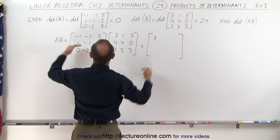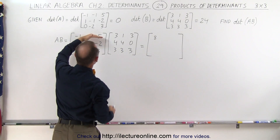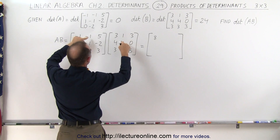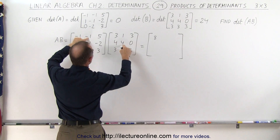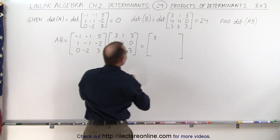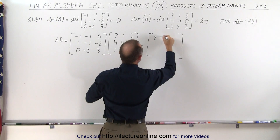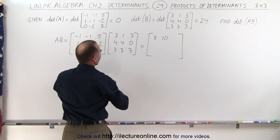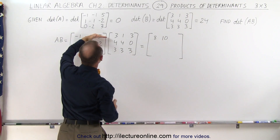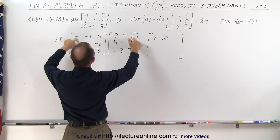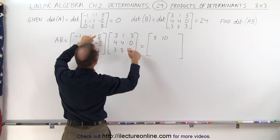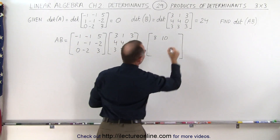To get the second element we multiply the first row times the second column: minus 1, minus 4 is minus 5, plus 15 — so minus 5 plus 15 is 10. And to get the third element we multiply this row times this column: minus 3, minus 3, plus 0, plus 15 is plus 12.